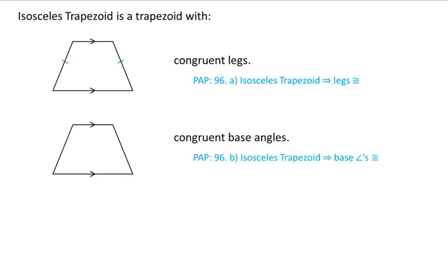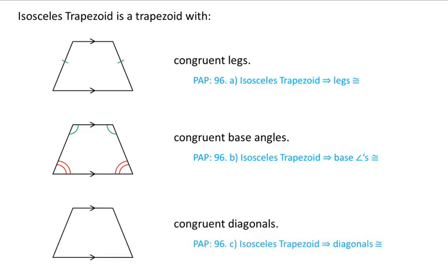An isosceles trapezoid also has congruent base angles. So that's the two angles next to each of the bases. Those two angles are congruent to each other. And then last, we have congruent diagonals. Again, just like with rectangles, it's awkward to draw in that they're congruent with our little congruency marks, so I'm just going to make them both green.